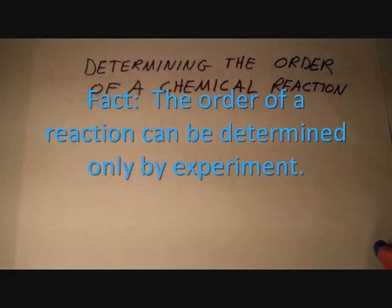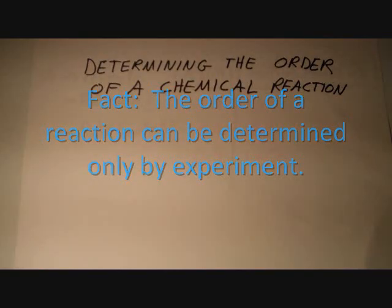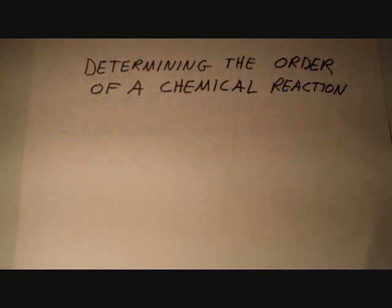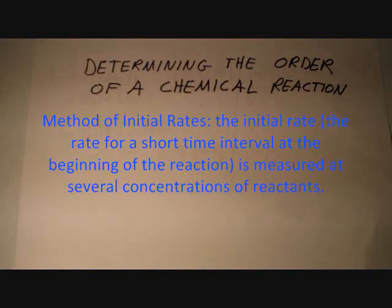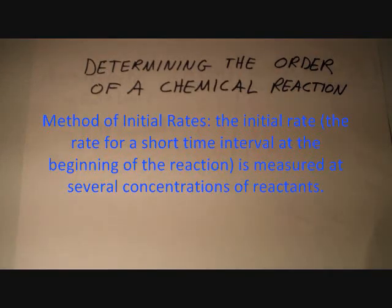The only way to figure out the order of the reaction is to run the experiment, measure the rate, and see what you get. The method we normally use is called the method of initial rates. In the method of initial rates, the initial rate — the rate for a short time interval at the beginning of the reaction — is measured at several concentrations of the reactants.